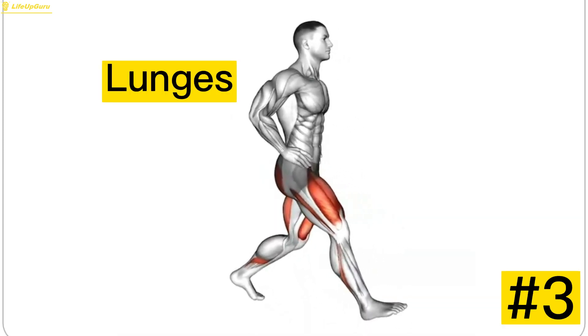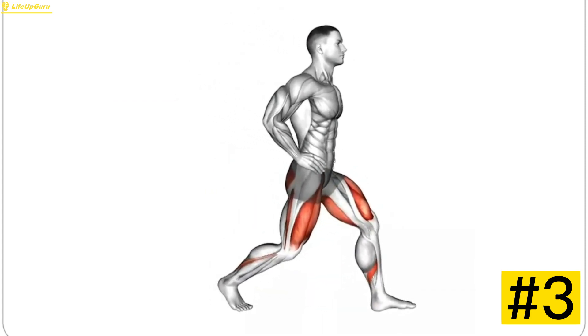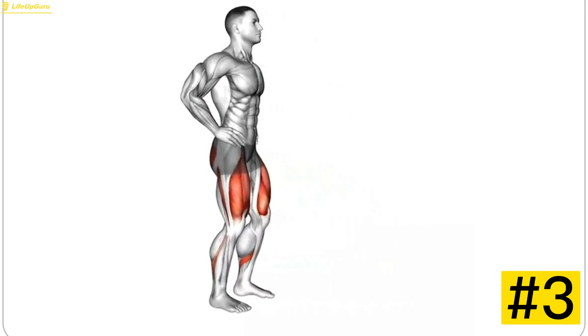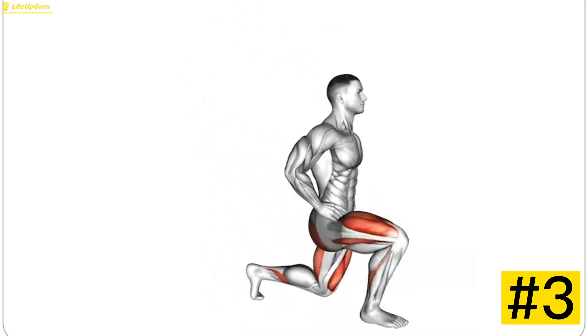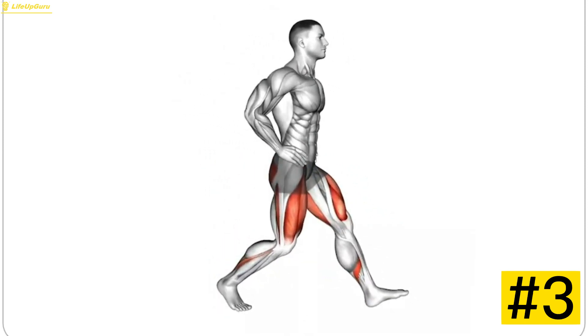Exercise 3, Lunges. Lunges are great for developing strength and stability in your legs and glutes. Take a step forward with one leg and lower your body until both knees are bent at a 90-degree angle. Push back up and alternate legs. Repeat for a challenging leg workout.